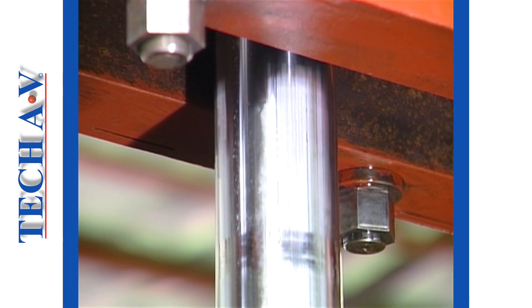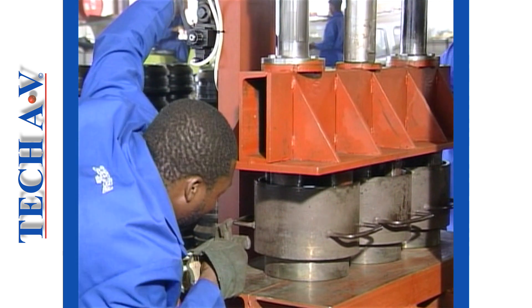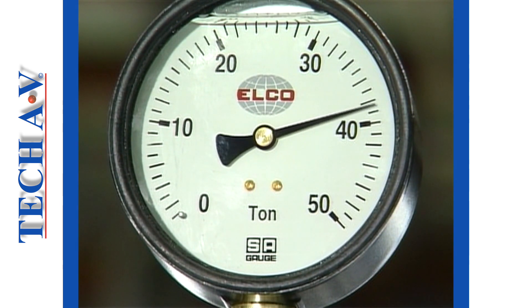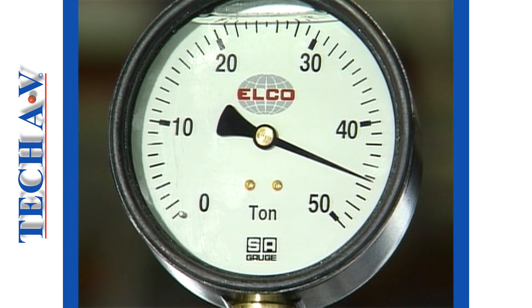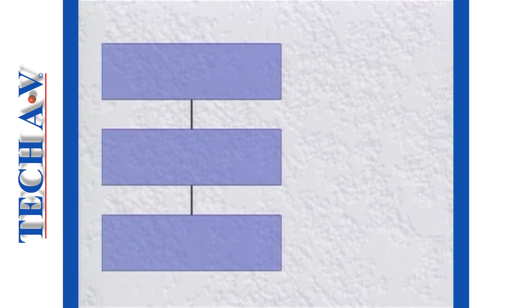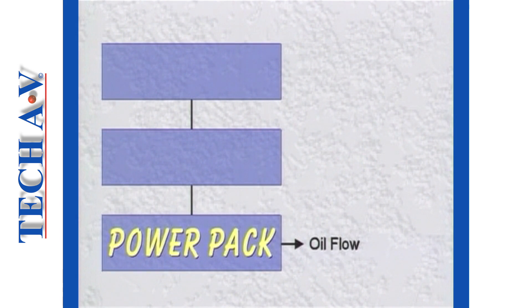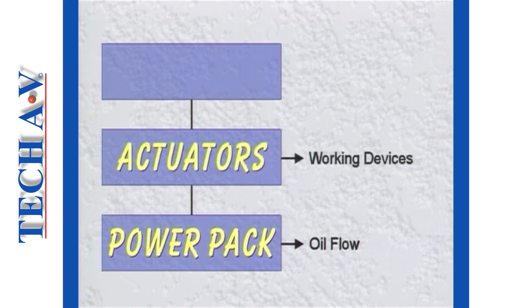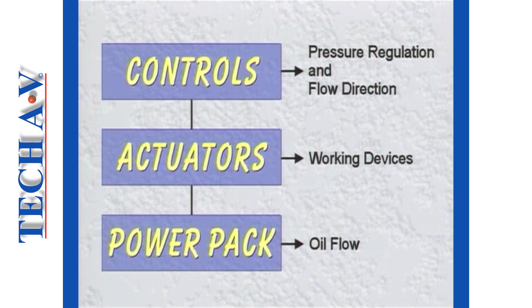Hydraulic systems based upon these principles are capable of producing extremely powerful forces. Bearing these points in mind, let us take a look at the makeup of a typical hydraulic system. Any hydraulic system will comprise three main sections: a power pack responsible for oil flow through a system, actuators which convert oil flow into pressure and work, and control devices that take care of pressure regulation and flow direction.